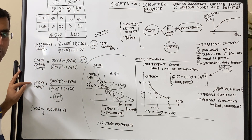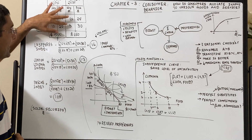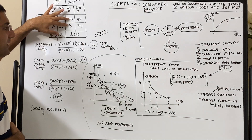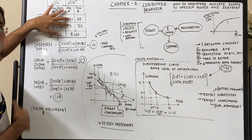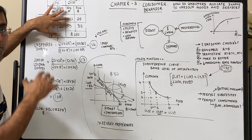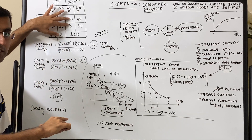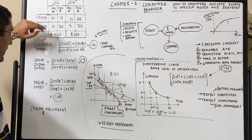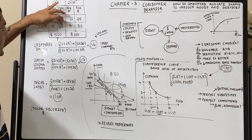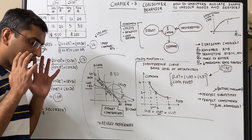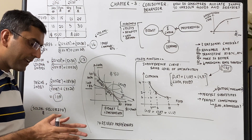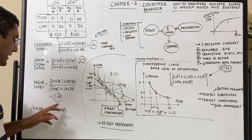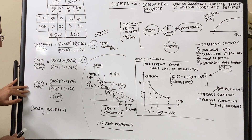The Paasche index is the opposite approach. It takes current year quantities at current year prices versus current year quantities at base year prices: (20×25 + 5×30) divided by (20×15 + 5×20). It compares what consumers are buying today at today's prices versus what those same current quantities would have cost at 2010's prices. That comes out to 1.8. So we have a spectrum: Laspeyres at 1.6, cost of living around 1.3, and Paasche at 1.8.